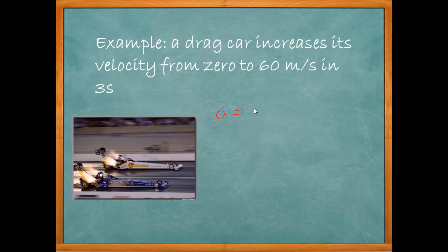Acceleration equals the final velocity V minus initial velocity U divided by T. The final velocity is 60, so I put 60 in there. The initial velocity is 0, starting from rest. Time is 3, so I put 3 there.